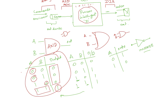Another combination with inputs A and B: when both are 0, output is 0; when one is 0 and the other is 1, output is 1; but when both are 1, output is 0. So when the inputs are opposite, output is 1; when they're the same, output is 0. This is called the Exclusive-OR, or XOR gate. All of these — AND, OR, XOR, inverter — are called basic gates.